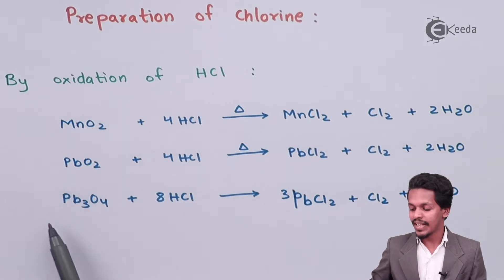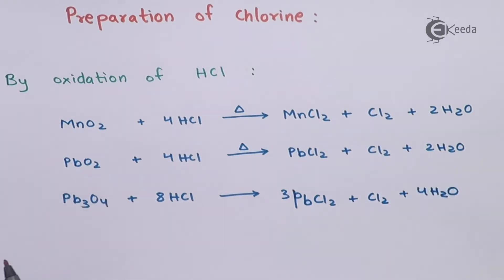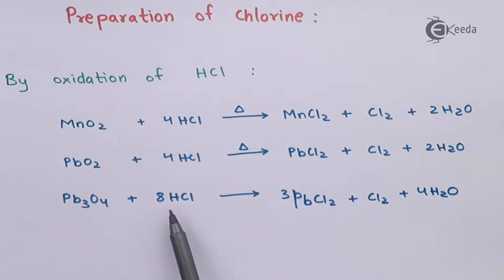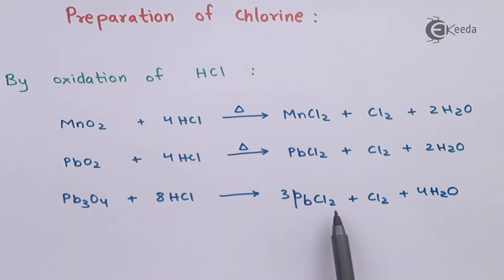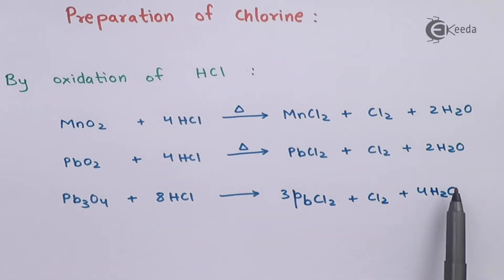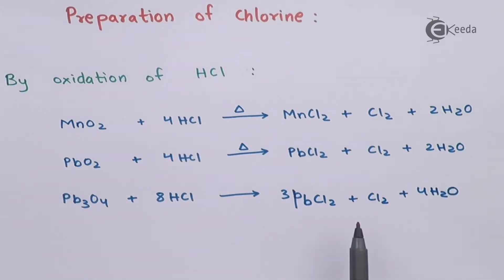Whenever red lead, that is Pb3O4, is treated with 8 moles of HCl, we obtain 3 moles of PbCl2 along with H2O as a byproduct, and Cl2 is what we need. So therefore even this reaction allows us to obtain chlorine gas.